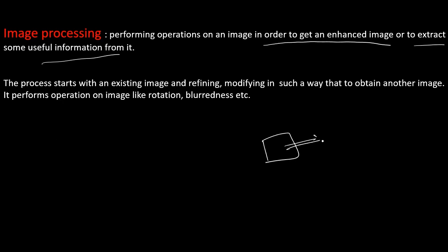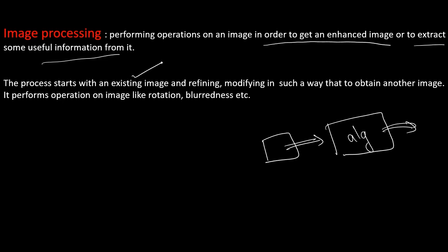With the help of a camera the image is captured, and inside the system, with the help of some algorithms, we are modifying and refining it. Whatever the user requirement — an enhanced image or extracting some useful information from that picture — the output will appear accordingly. So image processing takes an existing image and refines or modifies it in such a way as to obtain another image.